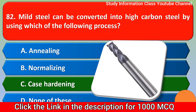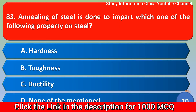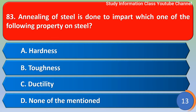Next question: Annealing of steel is done to impart which one of the following property on steel? Option A hardness, option B roughness, option C ductility, option D none of the mentioned. Option C is the correct answer — ductility.